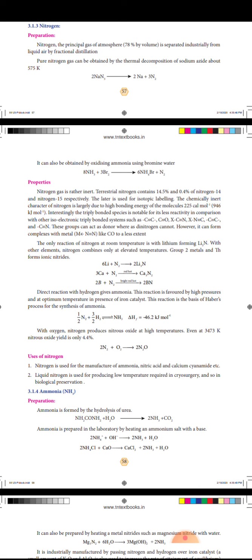Nitrogen-15 is used for isotopic labeling. The chemically inert character of nitrogen is largely due to high bonding energy of the molecules: 225 calories per mole or 946 kJ per mole.